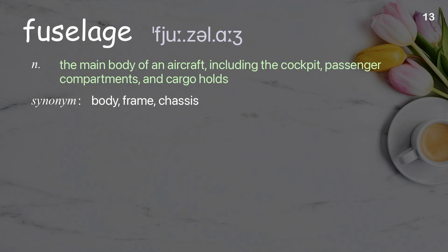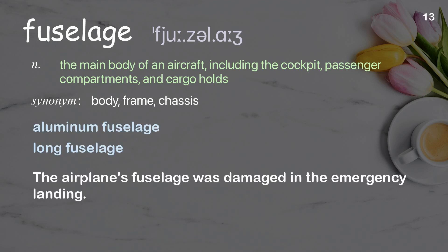Fuselage: The main body of an aircraft, including the cockpit, passenger compartments, and cargo holds. Examples: Aluminum fuselage. Long fuselage. The airplane's fuselage was damaged in the emergency landing.